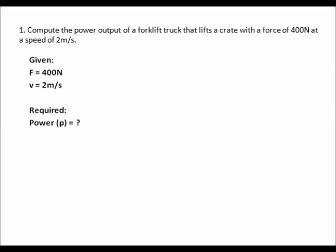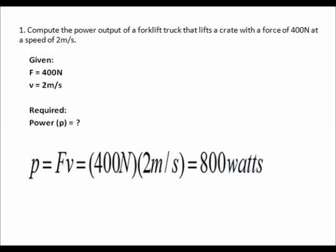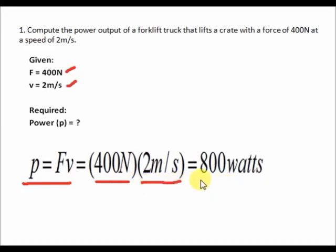Now let us solve some problems regarding power. For problem number one, compute the power output of a forklift truck that lifts a loaded crate with a force of 400 newtons at a speed of 2 meters per second. The given data are: force F equals 400 newtons and velocity V equals 2 meters per second. We are required to calculate the power P. Since all data are in correct units with nothing to convert, we can directly compute using P = F·V, which equals 400 newtons multiplied by 2 meters per second, giving an answer of 800 watts.